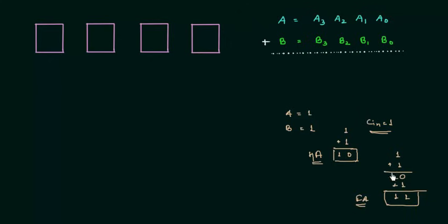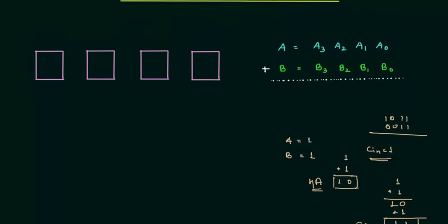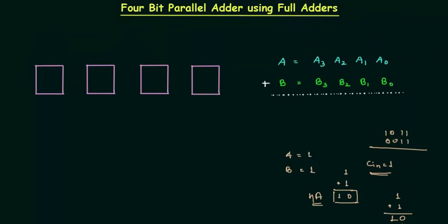So this is all that we have learnt till now — we have only added single-bit numbers. We have not added multi-bit numbers like 1 0 1 1 0 0 1 1. We have not added two multi-bit numbers, and that is what we are going to do in this presentation. We are going to obtain a 4-bit parallel adder by using full adders.